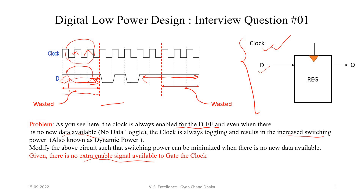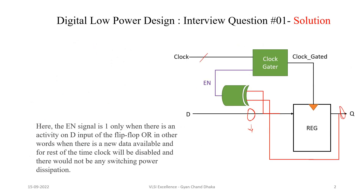Whenever there is a difference between the input data and the output data of the flip-flop, that means the input data has changed and has a new value. If we use an XOR gate with inputs being the flip-flop input signal and the flip-flop output signal, whenever new data is available the XOR output will be 1. We can use this XOR output as an enable signal and pass it to a clock gator circuit to generate a gated clock applied to the flip-flop.